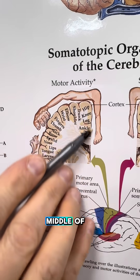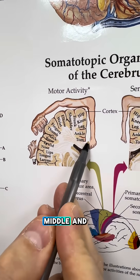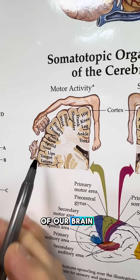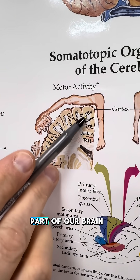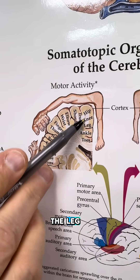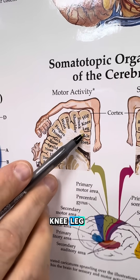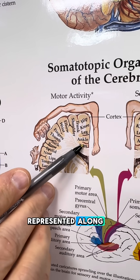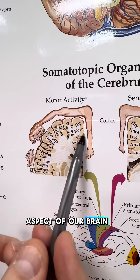This is the middle of the brain here, and this is the outside of the brain. You can see on this map, in the middle part of our brain, the leg representation — hip, knee, leg, ankle, and toes — that's all represented along the inside middle aspect of our brain.